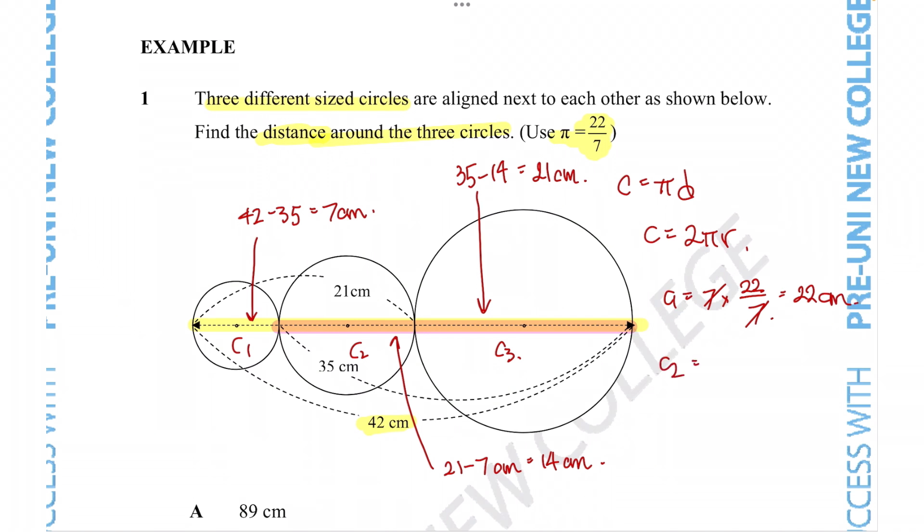For circumference of circle 2, exactly the same process, we use π = 22/7. We know the diameter was equal to 14 centimeters, so 7 goes into 14 twice, giving us 44 centimeters.